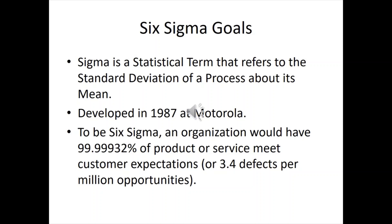The term Six Sigma first came about in 1987 at Motorola, and what they wanted to do was improve product quality. If you think back, I'm old enough to remember when TVs failed like every two weeks and you'd have to do test tubes and things like that. They don't break anymore — things are high quality and better, and that's because of Six Sigma.